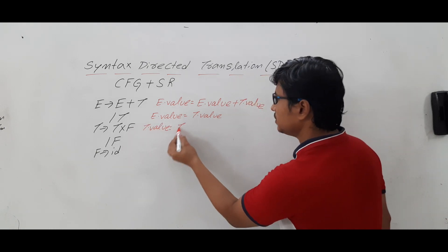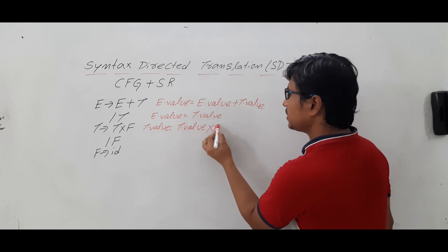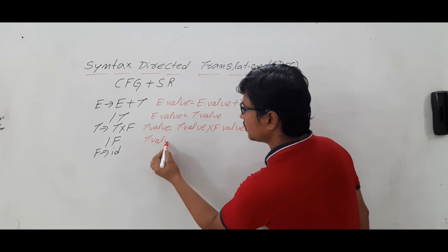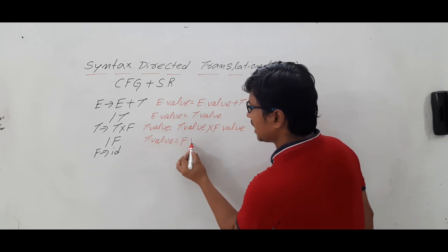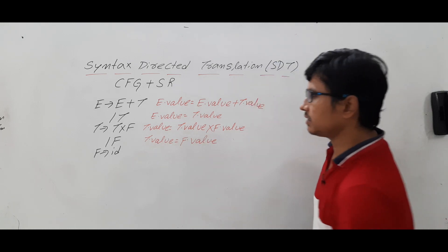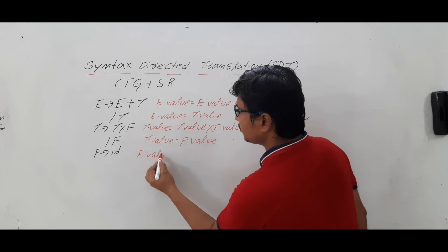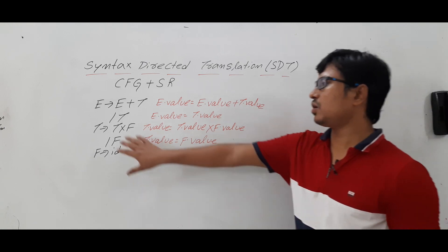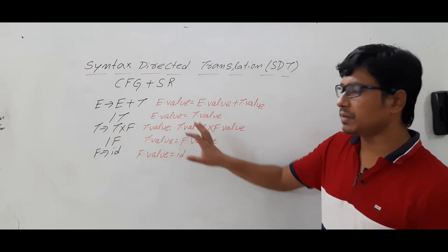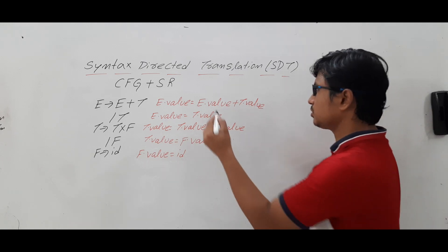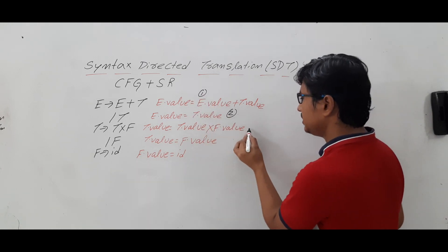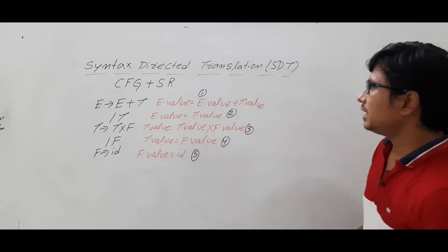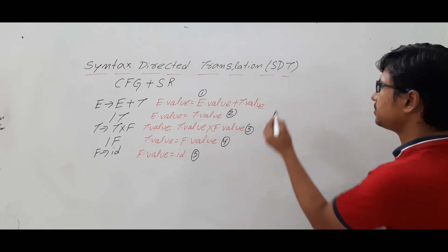Similarly, T dot value is equal to F dot value. And whenever F is determining ID, I want to write it as F dot value is equal to ID. So this is the context free grammar and these are the semantic rules. Let me write the number for each rule: this is rule one, this is two, this is three, four, and five.